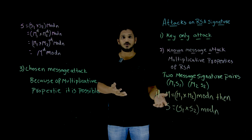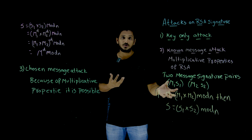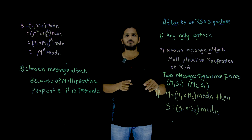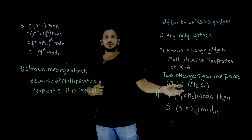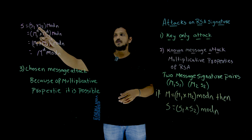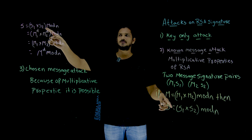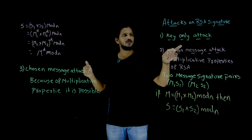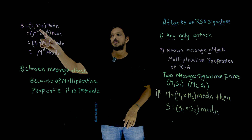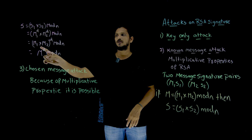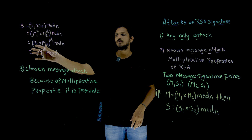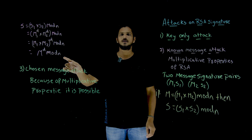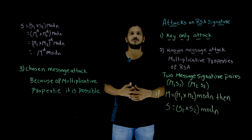This is possible — let's understand the derivation. This is possible only if the same private key is used for both message-signature pairs. Take S = S1 multiplied by S2 mod N. S1 can be written as M1 power D, so S = M1^D multiplied by M2^D mod N. This can be written as (M1 multiplied by M2) whole power D mod N, which gives you the new signature for the combined message.